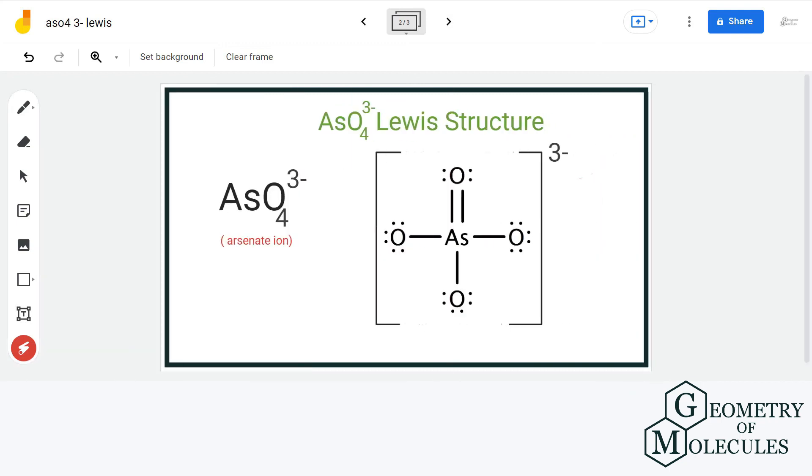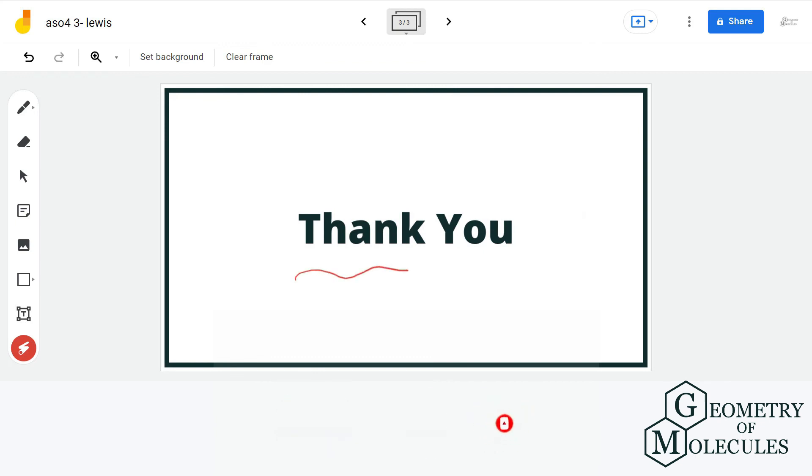So, this is the final Lewis structure of arsenate ion. For more such videos, make sure to subscribe our channel and thank you for watching.